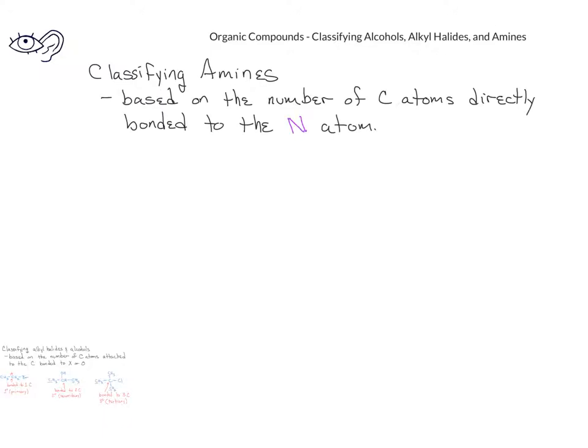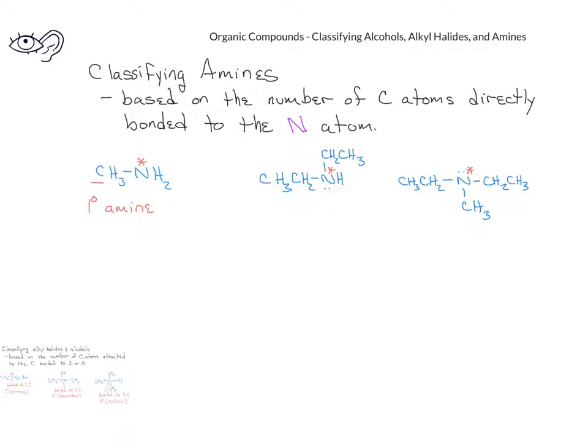Amines are classified differently from alkyl halides and alcohols. When we classify amines, instead of focusing on the carbon attached to the nitrogen, what we do is we focus directly on the nitrogen itself. In this first example, where we have a nitrogen bonded to one carbon, we would call this a primary amine. In the second example, the nitrogen is directly bonded to two carbons, and we would indicate that this is a secondary amine. In the third example, the nitrogen is directly bonded to three carbons, and we would call this a tertiary amine.